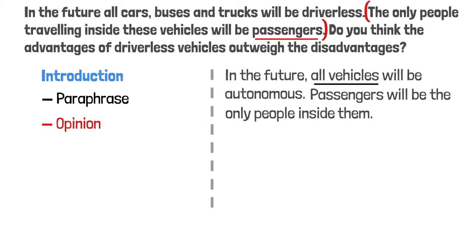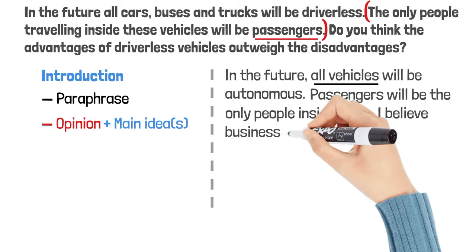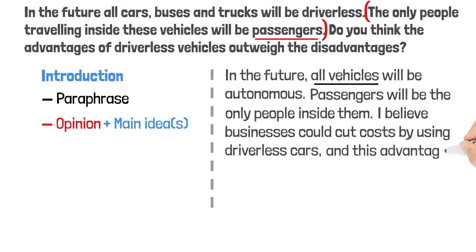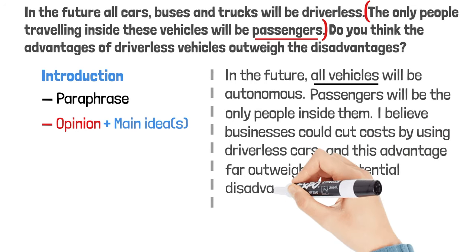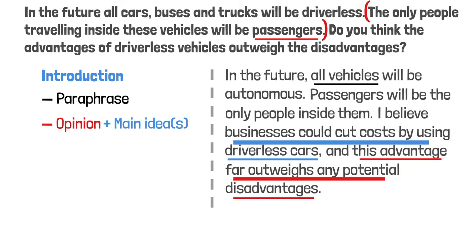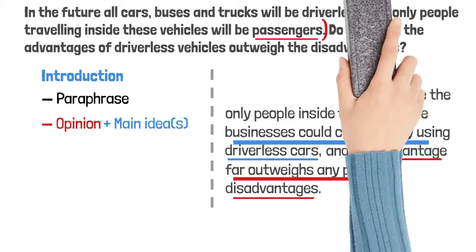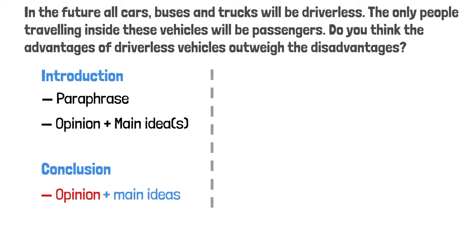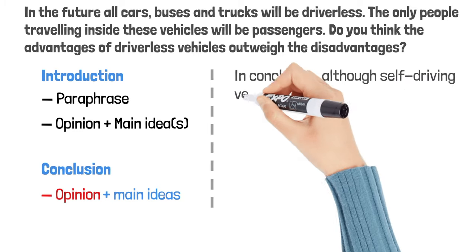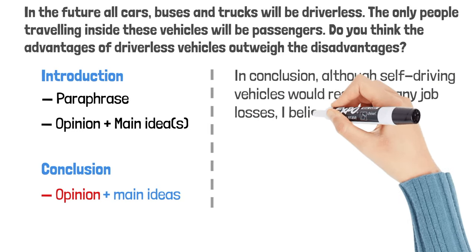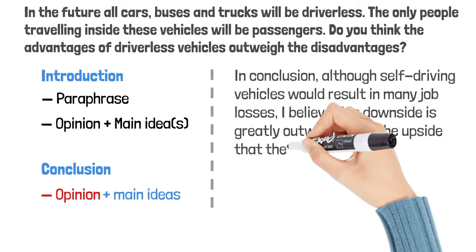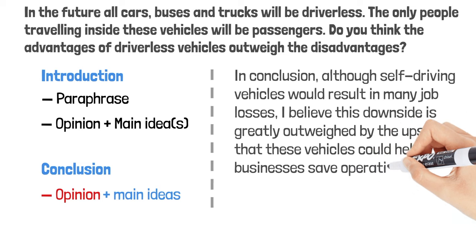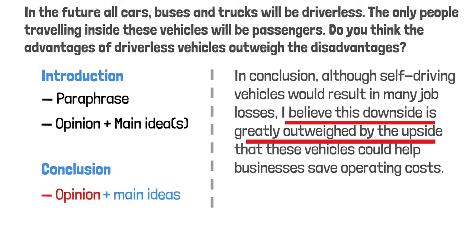Next, I will give my opinion. You can include the two main ideas in your opinion sentence, or include only the main idea of the side that you agree with. I believe businesses can cut costs by using driverless cars, and this advantage far outweighs any potential disadvantages. In the conclusion paragraph, I will state the main ideas of both sides: 'Although self-driving vehicles could result in many job losses, I believe this downside is greatly outweighed by the upside that these vehicles could help businesses save operating costs.' This is my opinion and these are the two main ideas.